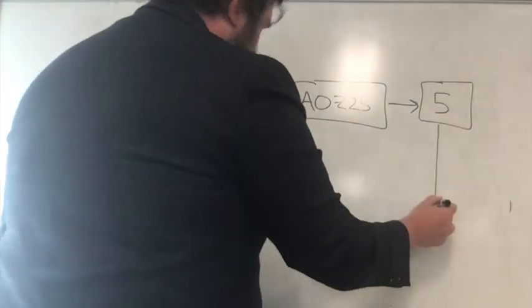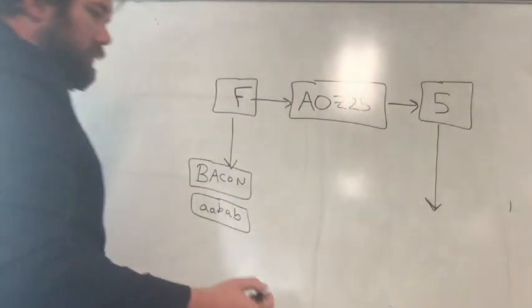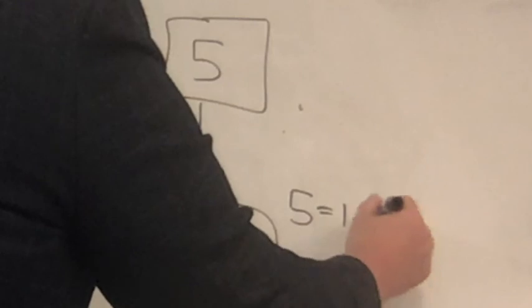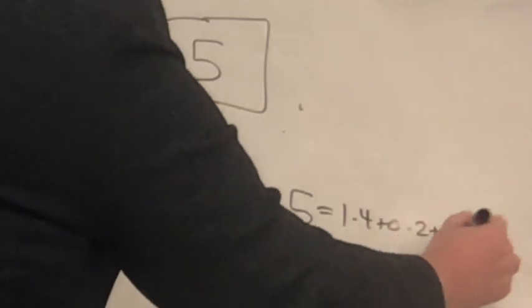If I converted 5 to binary, what would it be? I can just say 5 is 1 times 4 plus 0 times 2 plus 1 times 1. So it's 1, 0, 1. And then if I said I really want to make this be 5 long, I would just add 0s to the front.